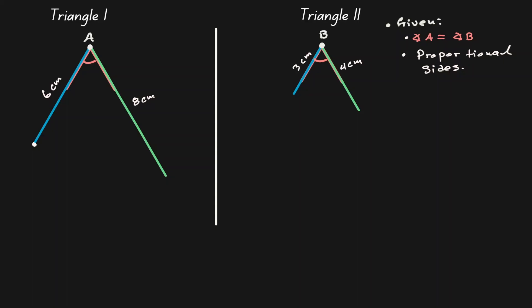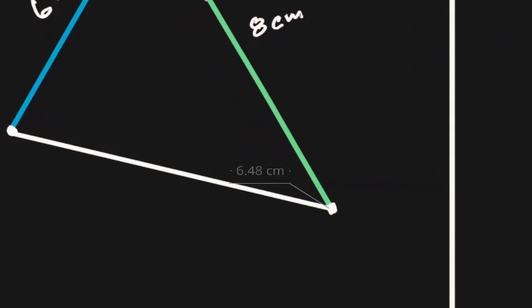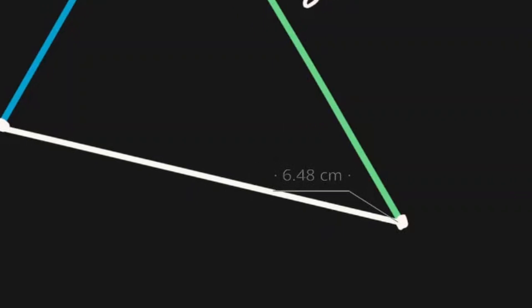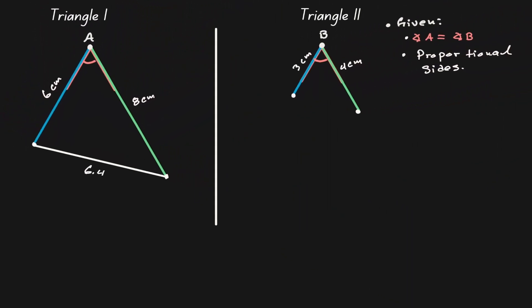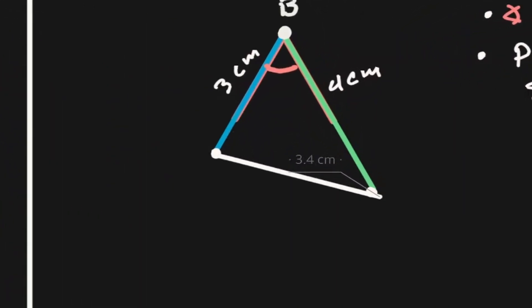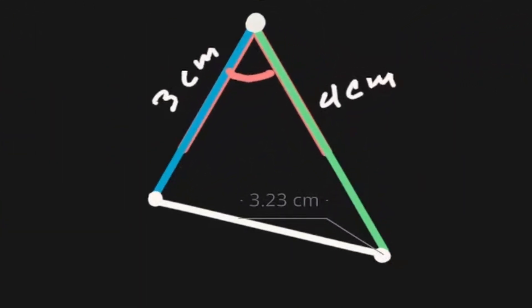Now let's connect the endpoints to create our two triangles. This line segment has a length of 6.4 cm, and this line segment has a length of 3.2 cm.